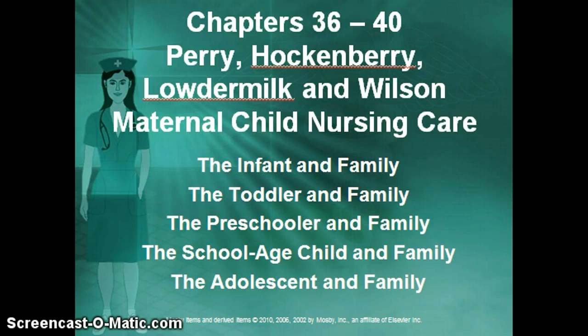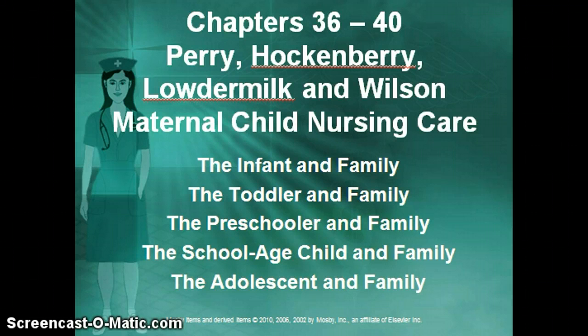As you can see from this slide, we're going to be covering chapters 36 through 40 in your Perry Hockenberry Loudermilk and Wilson Maternal Child Nursing Care book. You also need to refer to chapter 42, page 1183, which will discuss Down syndrome, as well as chapter 55, page 716, where you will find information about cerebral palsy.